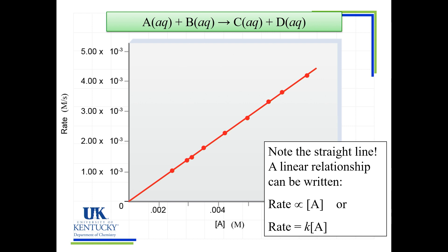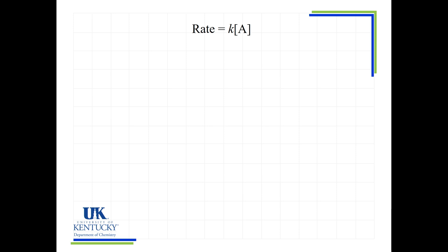They found a nice linear relationship and determined it was a power of one for A's concentration. That was just monitoring A — you'd also have to go monitor B and find its power.